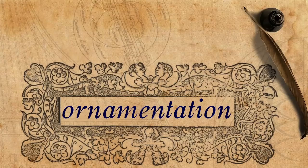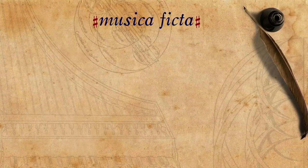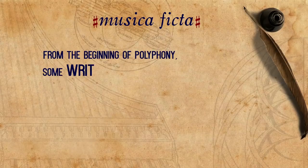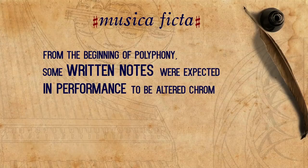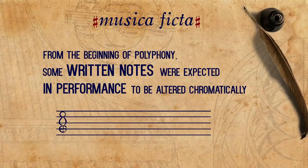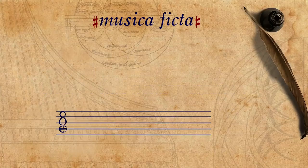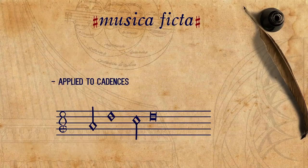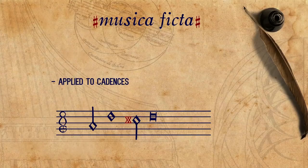Very briefly, from the beginning of polyphony, some written notes were expected in performance to be altered chromatically — G to G sharp, B to B flat, etc. Most often, musica ficta is applied to cadences, to make the cantizans sound the way it is expected to.